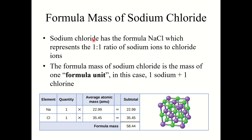For example, sodium chloride, which has the formula NaCl, represents a one-to-one ratio of sodium ions to chloride ions. The formula mass of sodium chloride is the mass of one formula unit — in this case, one sodium plus one chlorine. So to calculate this, just like molar mass from Chapter 2: one sodium atom times its average atomic mass plus one chlorine atom times its average atomic mass. You get a formula mass of 58.44 AMU.